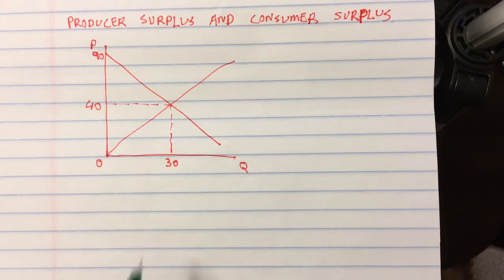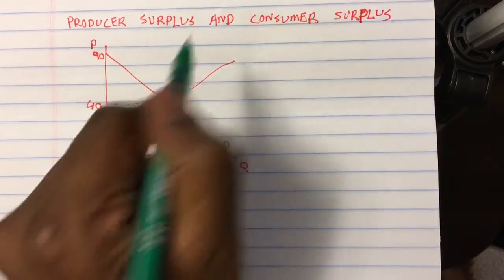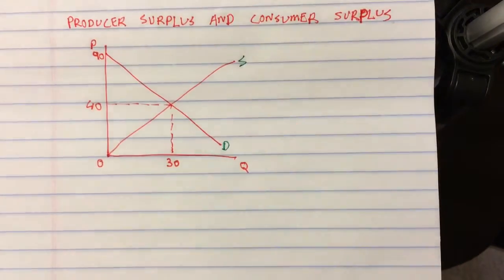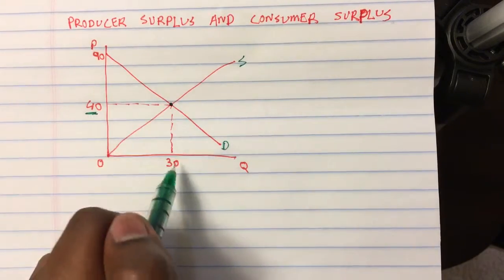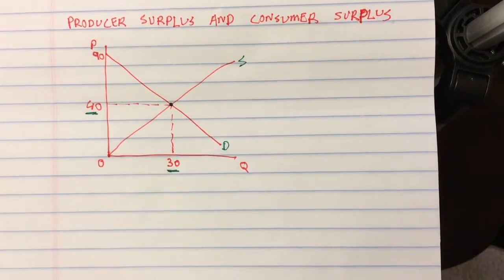So let's look at this demand curve and supply curve. This is my demand curve and this is my supply curve. The demand and supply curves intersect at price equals 40 and quantity demanded equals quantity supplied at 30 units.